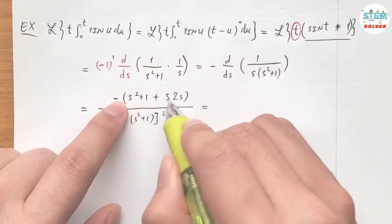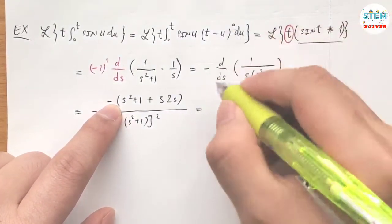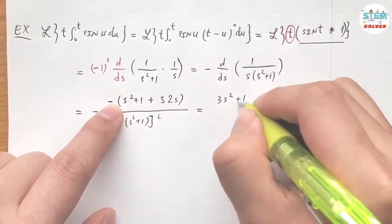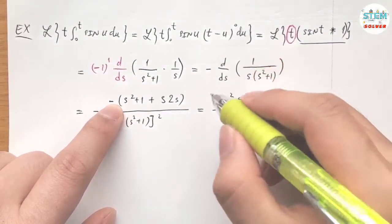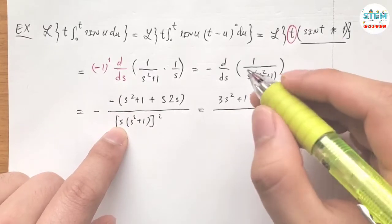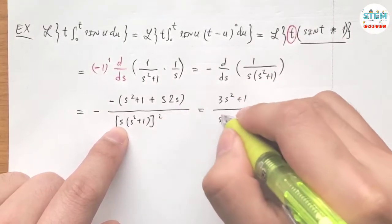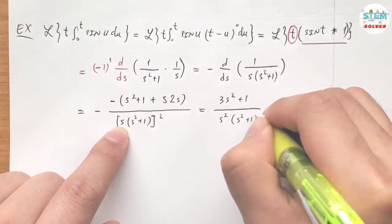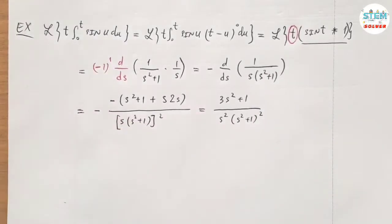So up here I have s squared plus 2s squared, 3s squared plus 1 over s squared. This is 2 times s squared plus 1 squared. Right, so this is your final solution.